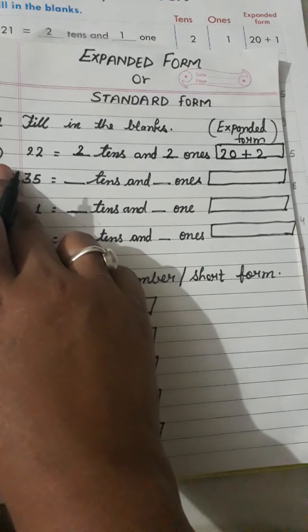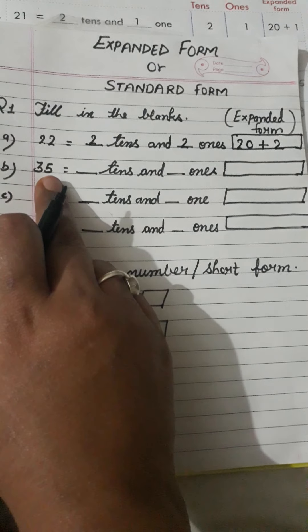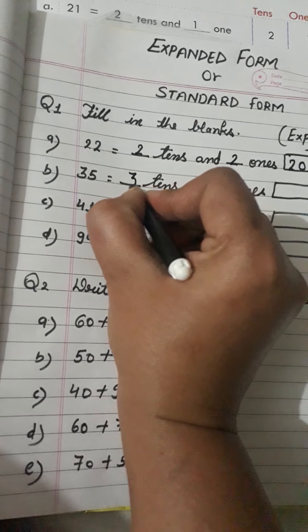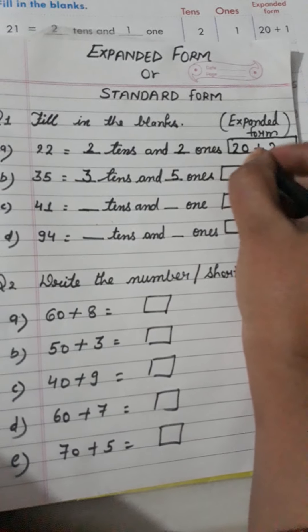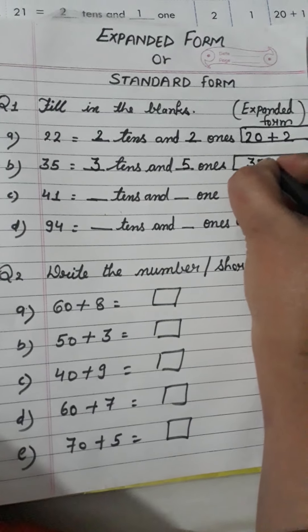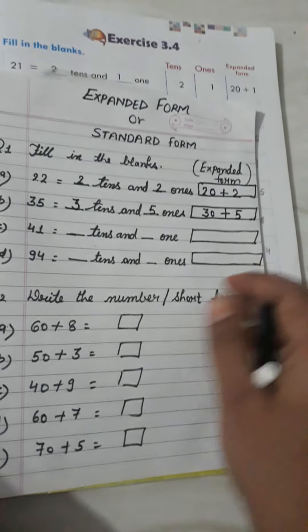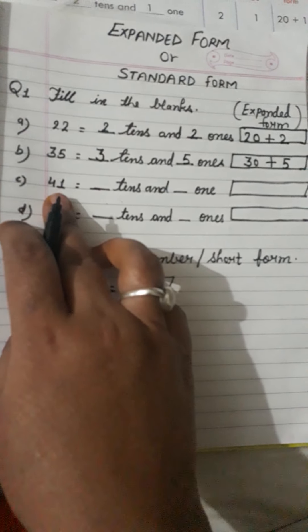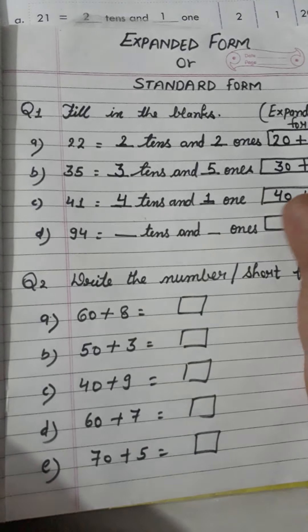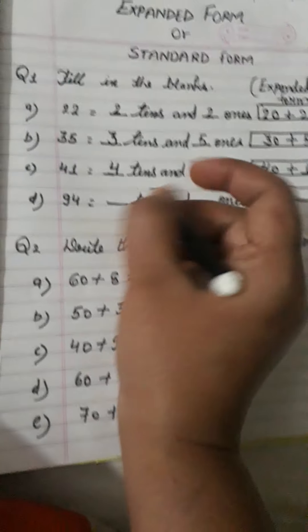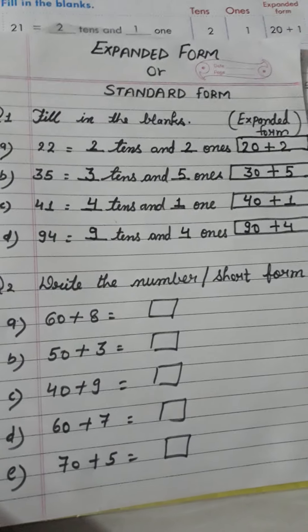Question number B: the number is 35 — 3 tens and 5 ones. The expanded form is 30 plus 5. In question number C, the number is 41 — 4 tens and 1 one. So we write 40 plus 1. This is expanded form. So 9 tens means 90 plus 4. Understand students, how you will solve it?